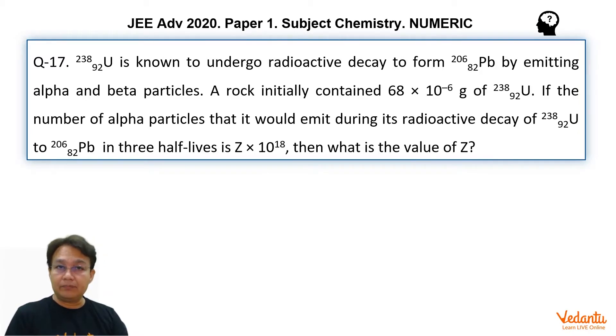The problem is of numeric type. In this problem, 238-92 uranium is known to undergo radioactive decay to form 206-82 lead by emitting alpha and beta particles. A rock initially contained 68 × 10^-6 grams of 238-92 uranium. If the number of alpha particles that it would emit during its radioactive decay in three half-lives is Z × 10^18, then what is the value of Z?